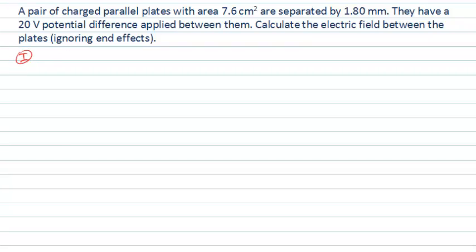We've got some information here about a system of parallel plates, two parallel plates. We know about the area and the separation, and they've got a 20 volt potential difference applied across them. We're being asked to calculate the electric field between the plates.